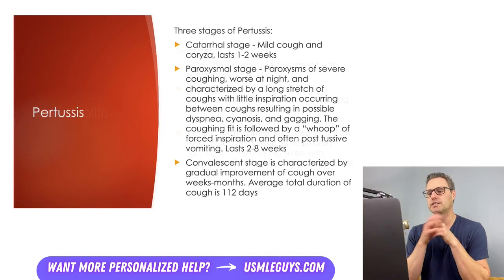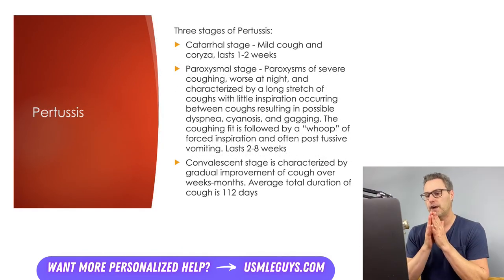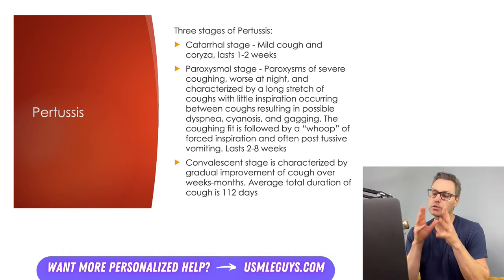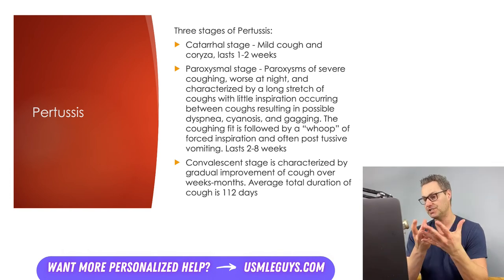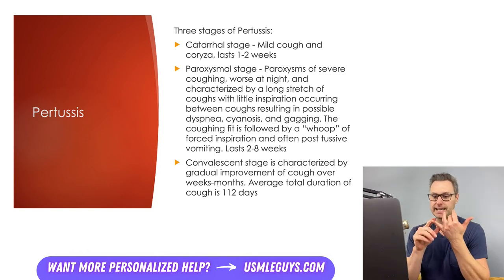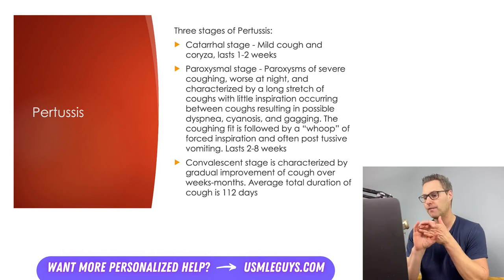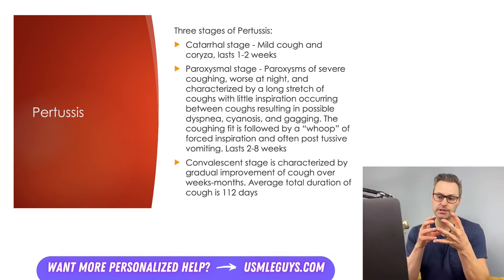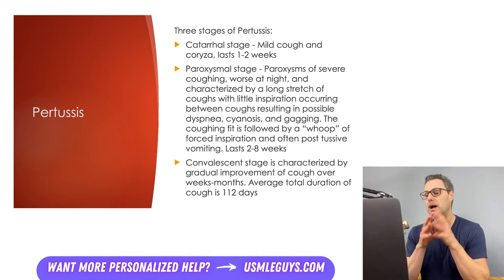Next up, we've got Bordetella pertussis, also known as whooping cough. This infection is covered by the DTaP vaccine, but children who haven't completed or received this vaccine, or young adults with waning immunity, can be affected. There are three stages of pertussis: the catarrhal stage, the paroxysmal stage, and the convalescent stage. The catarrhal stage is characterized by mild cough and coryza and lasts one to two weeks.